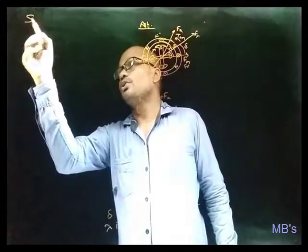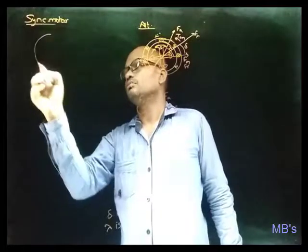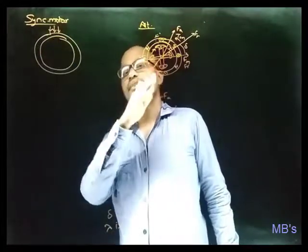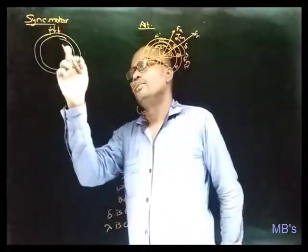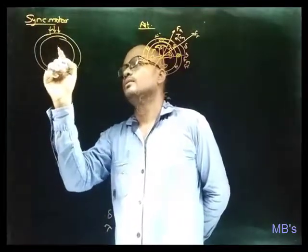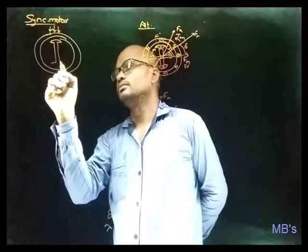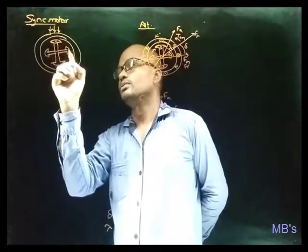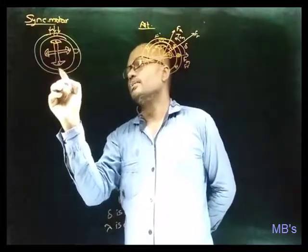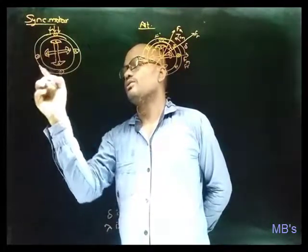Now consider the case of synchronous motor. For synchronous motor, electrical energy is the input — in the case of alternator, current is delivered, whereas in the case of synchronous motor, current is received. Consider the same geometry as in the alternator case: south pole, north pole, south pole, north pole. Let these be the conductors — this is cross, this is dot, and this is cross.